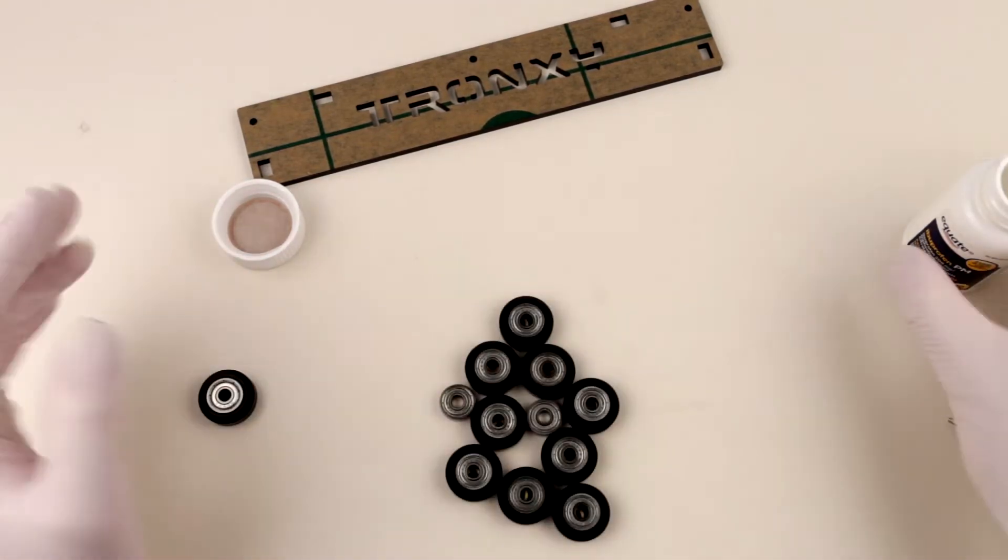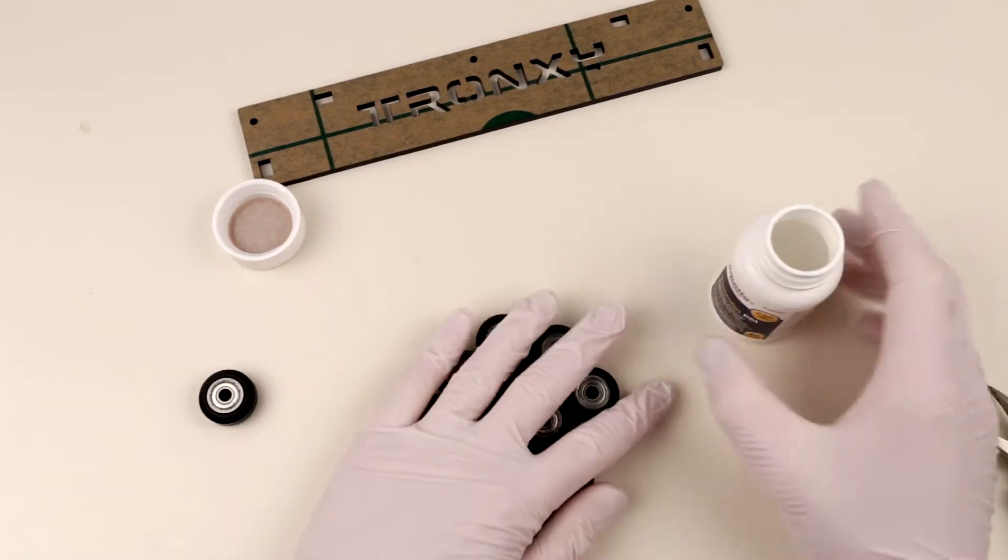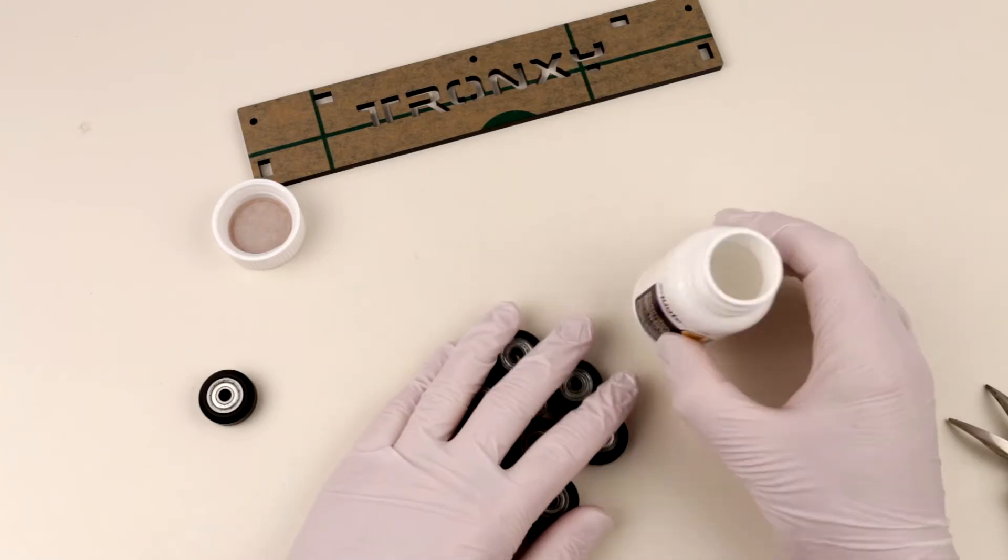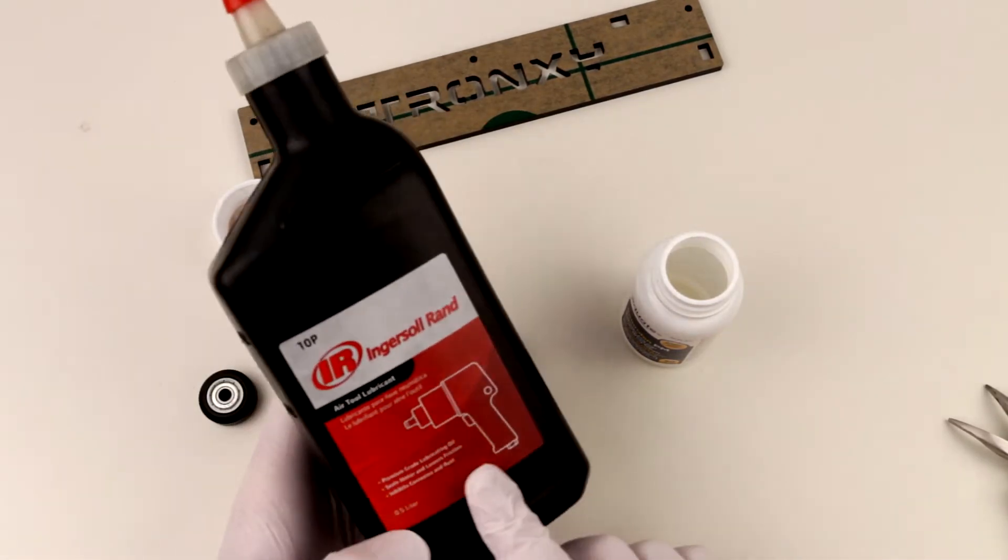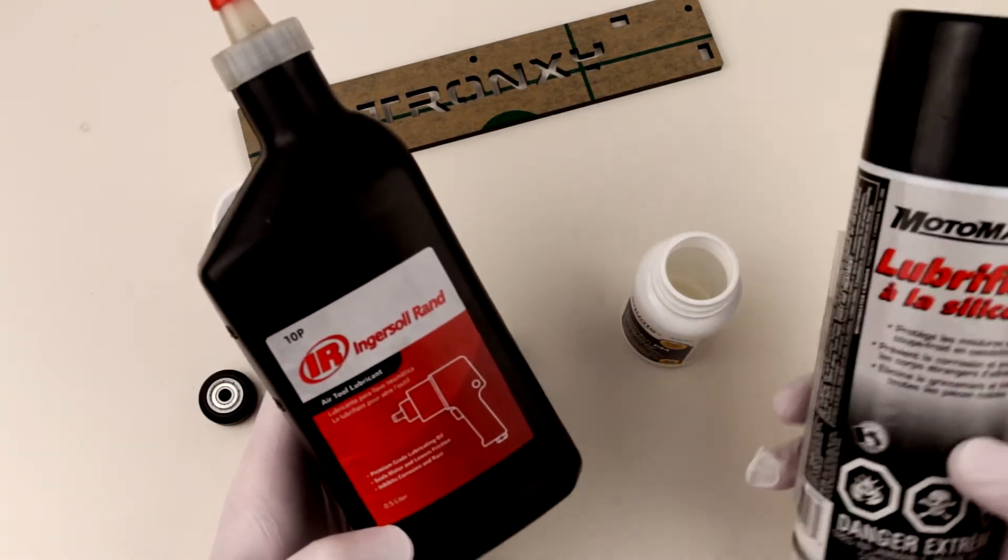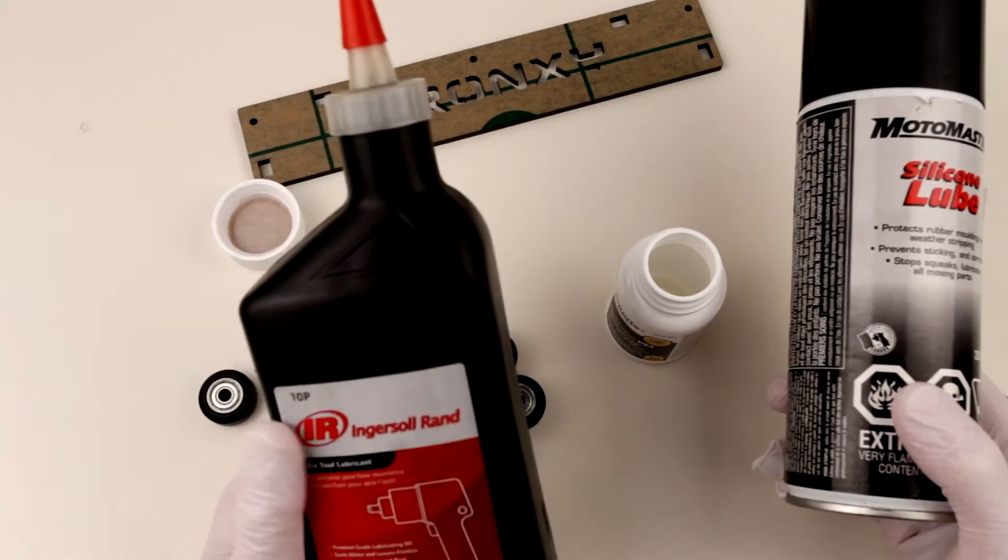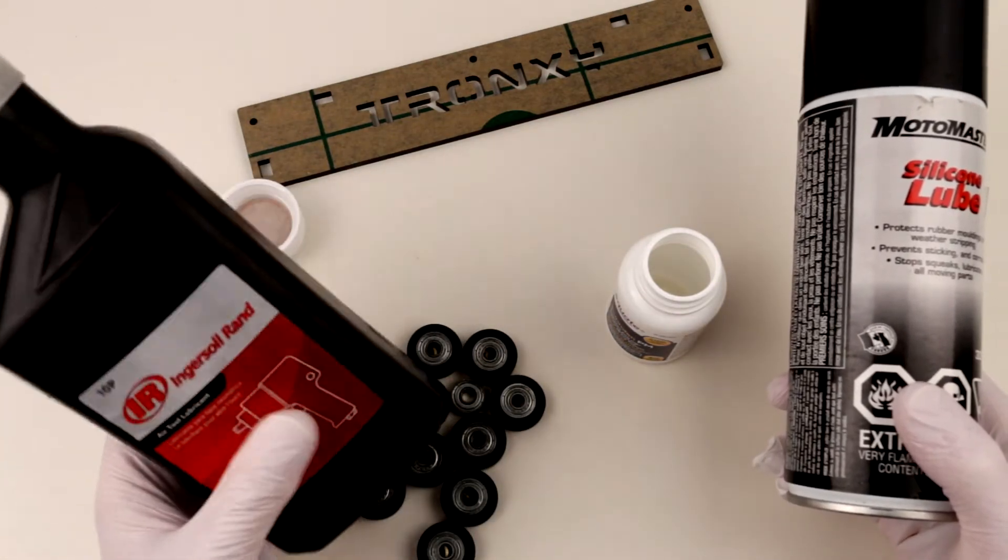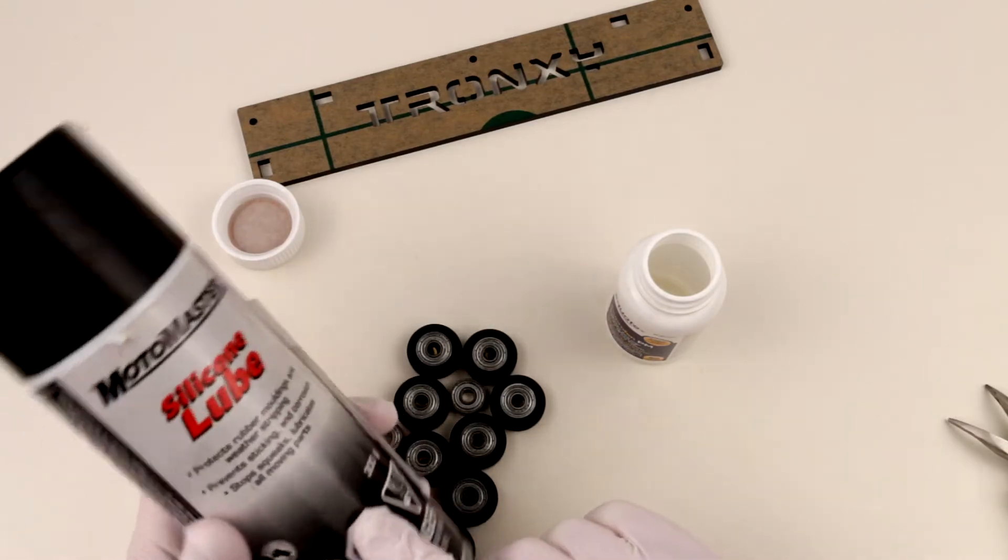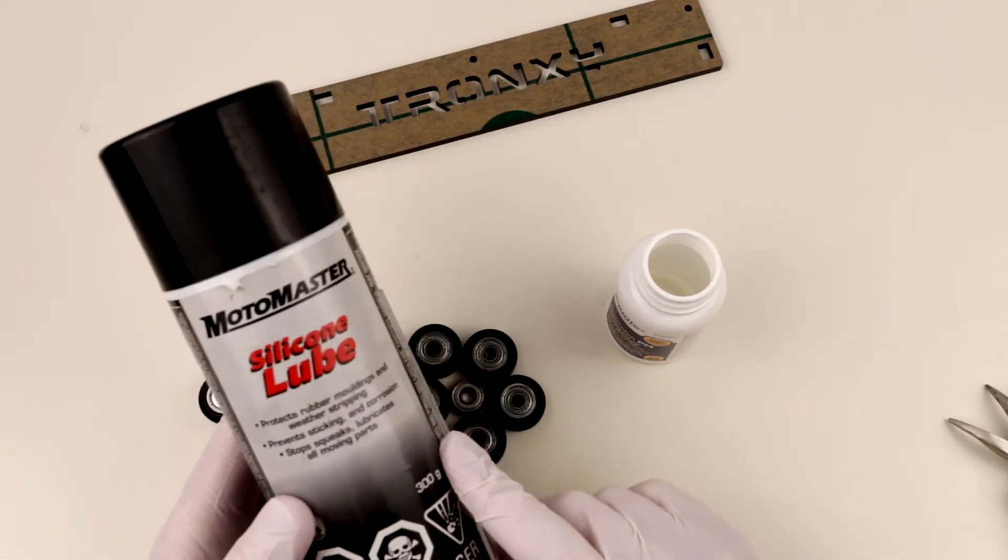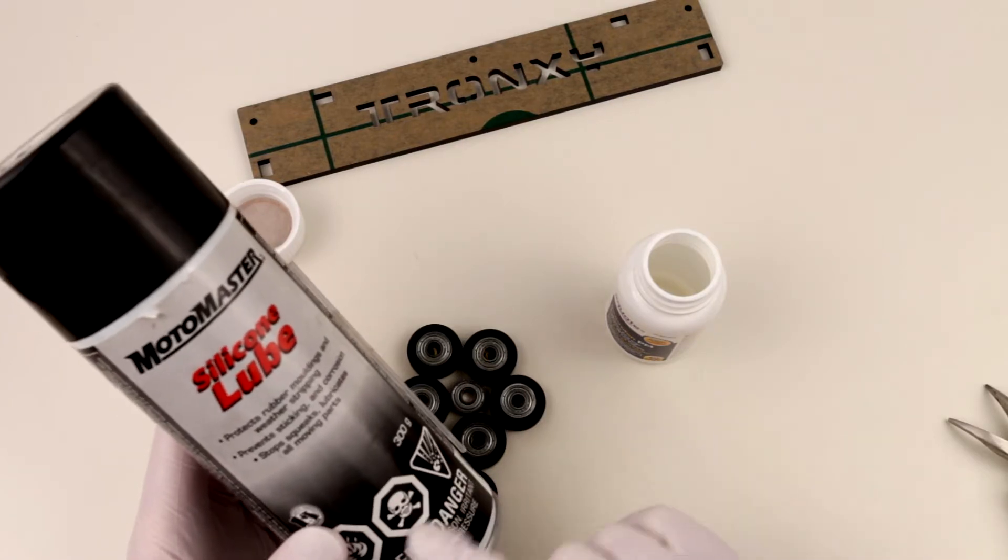We have a bunch of bearings which are cleaned up from the gunk, and now they are spinning more or less freely. Now we have to lubricate them. I have to also clean up this little container because we're going to use it for lubrication. From a lubrication perspective, I have two things: I have this Ingersoll air tool lubricant, and also have this silicone lubricant from Canadian Tire, the Motomaster brand. I was usually using this stuff on my bearings for my other 3D printer and it actually works very well because it's pretty light oil and lubricates very well. But I always wanted to try this one and we're going to give it a shot today.